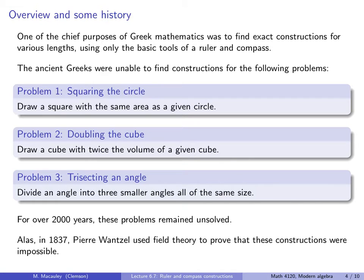In 1837, Pierre Wantzel used field theory to prove that these constructions were impossible. In the remainder of this lecture, we will re-examine these problems in more detail and try to understand what it means for a length or an angle to be constructible. It turns out that there is a field of constructible numbers, which is an extension field of the rationals, and a length or angle is constructible if and only if it lies in that extension field.